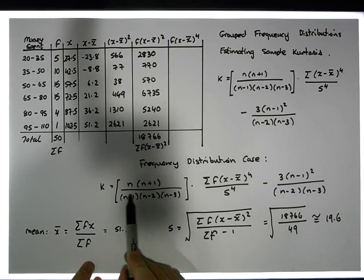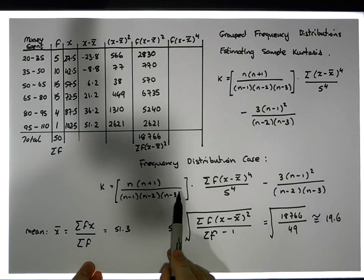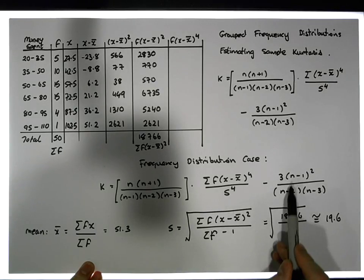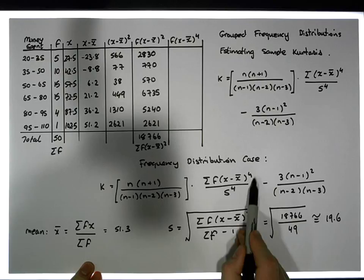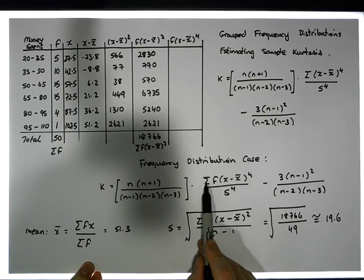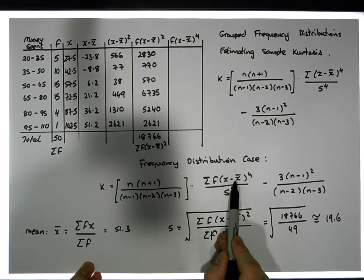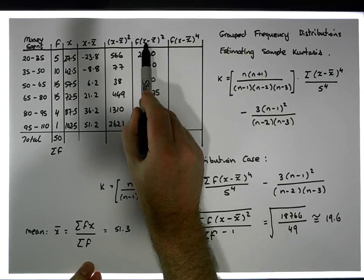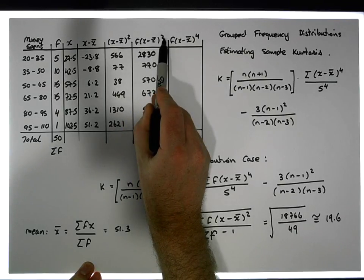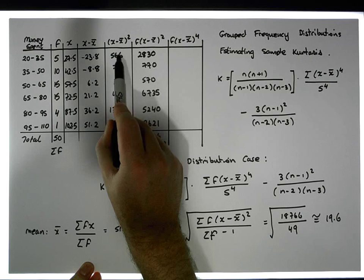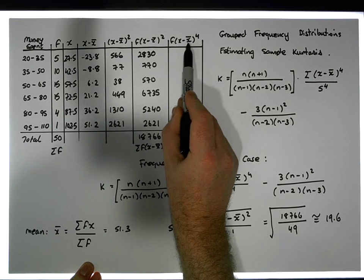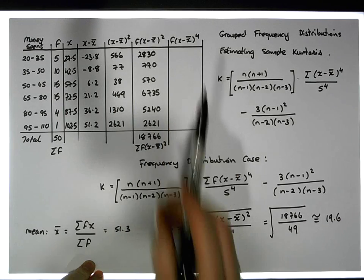We know all our sample sizes and our standard deviation. The only thing still missing is the sum of f times (x minus x̄) to the power of 4. We already have f times (x minus x̄)², so if we multiply those by the squared distance values again, it will give us f times (x minus x̄)⁴. Let's do that calculation.